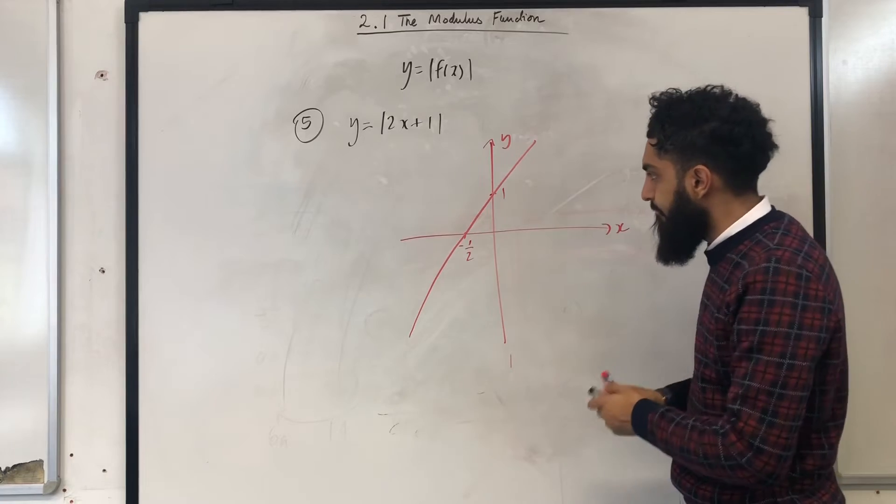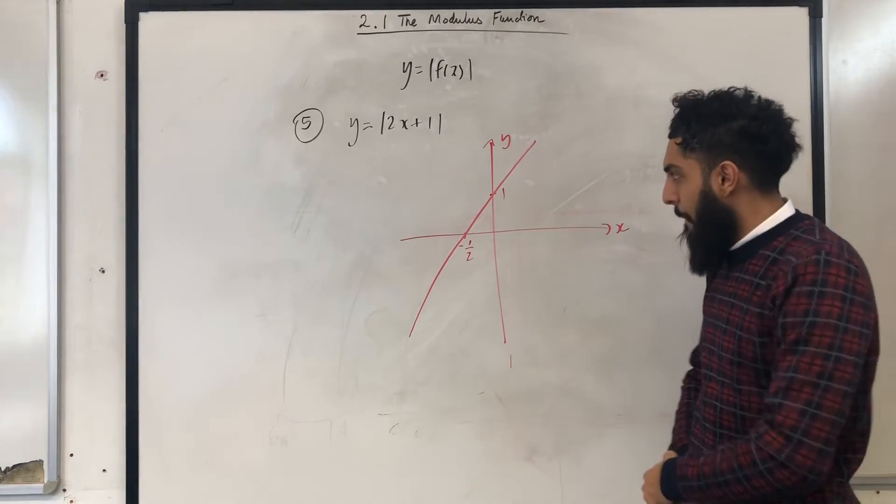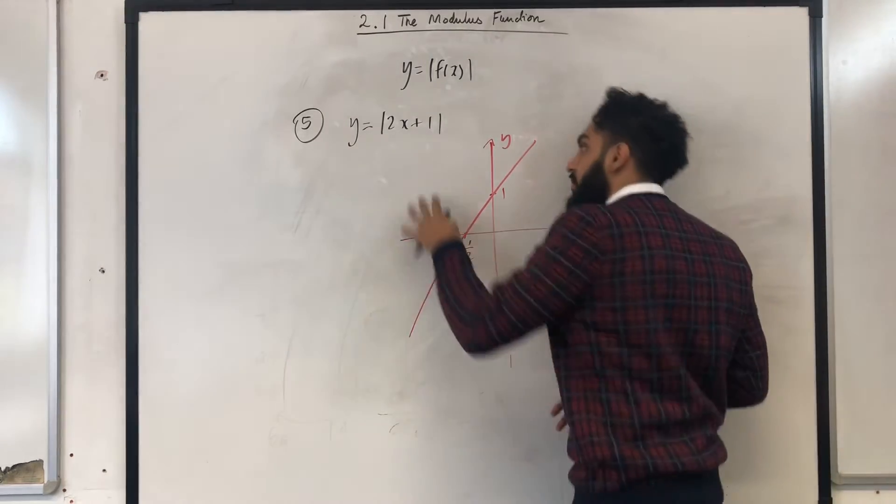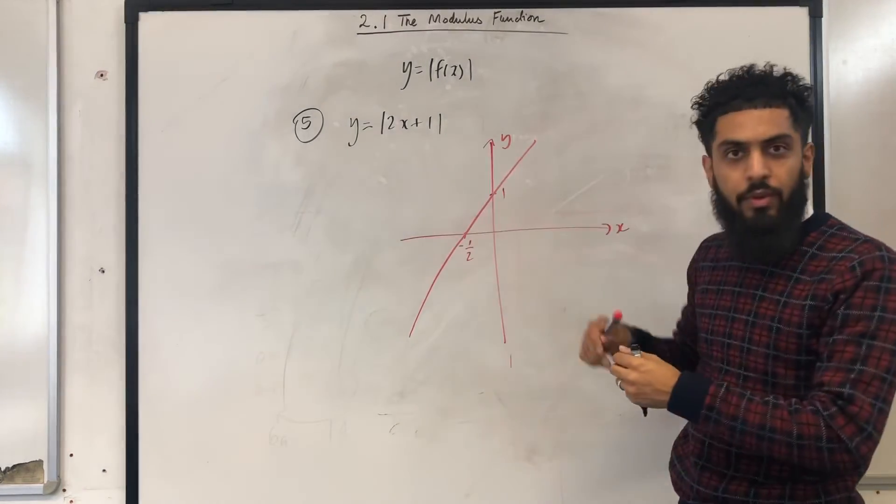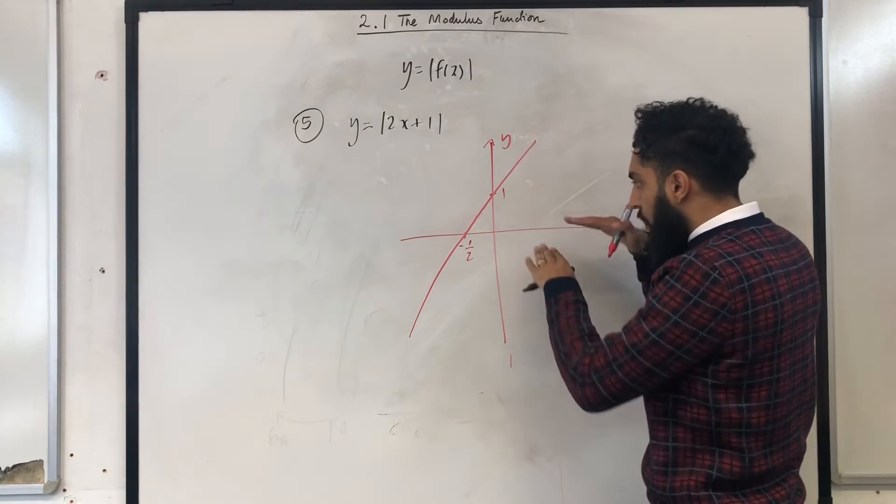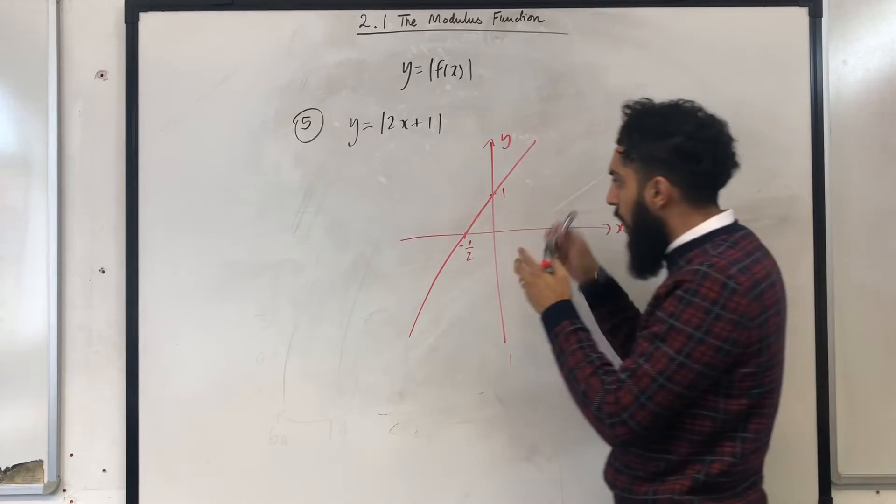Decent sketch. I want to sketch y equal to the modulus of 2x plus 1. That beautiful graph, that's what I'm interested in. So first of all, the part of the graph which is above the x axis stays the same. I can go over it in black.